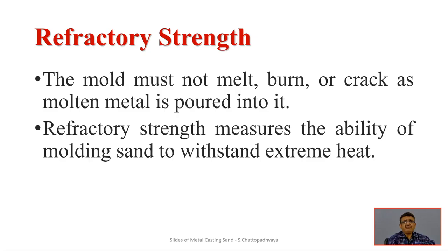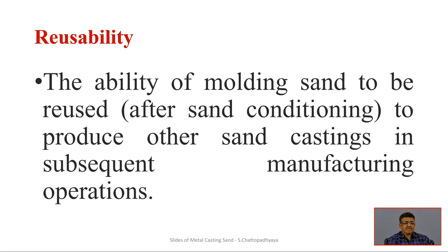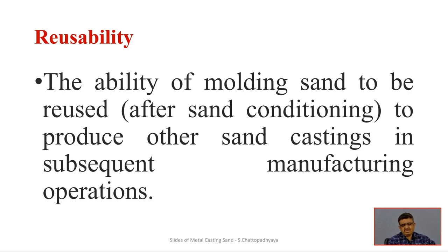Refractory strength means the mold must not melt, burn, or crack as molten metal is poured in. Ceramic material provides refractory strength, measuring the ability of the molding sand to withstand extreme heat and retain its strength even at elevated temperature. Reusability is also important for economic reasons — the ability of the molding sand to be reused after sand conditioning for subsequent casting operations is essential for economically viable manufacturing, and it is a key factor in the judicious selection of molding sands.